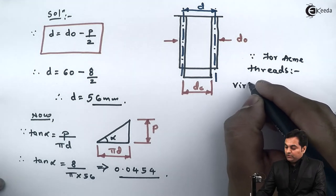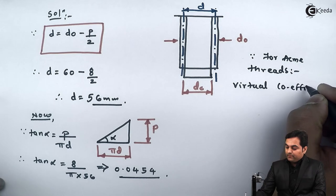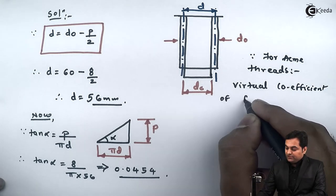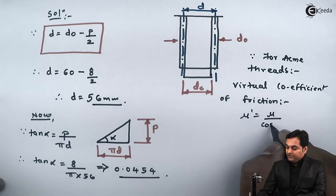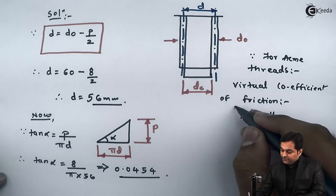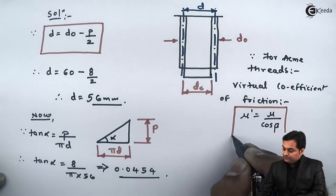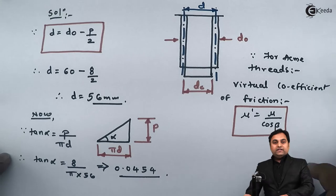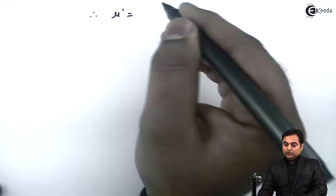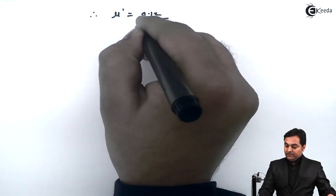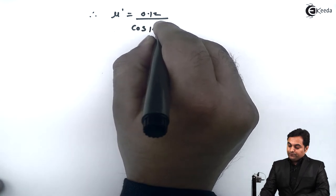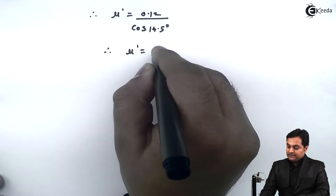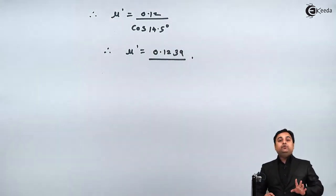Since this is an acme thread, we use the virtual coefficient of friction. For acme threads, the virtual coefficient of friction μ' = μ / cos β. Therefore, μ' = 0.12 / cos(14.5°), which gives μ' = 0.1239. This is the coefficient to be used for acme threads in subsequent calculations.